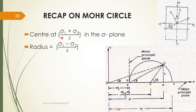σ₁ is the major principal stress and σ₃ is the minor principal stress. The radius of the circle — that is, from C to E — is (σ₁ - σ₃)/2. From O to point E you get σ₃, and from O to point F you get σ₁. If P is the pole, then this will be your major principal plane and this will be your minor principal plane.